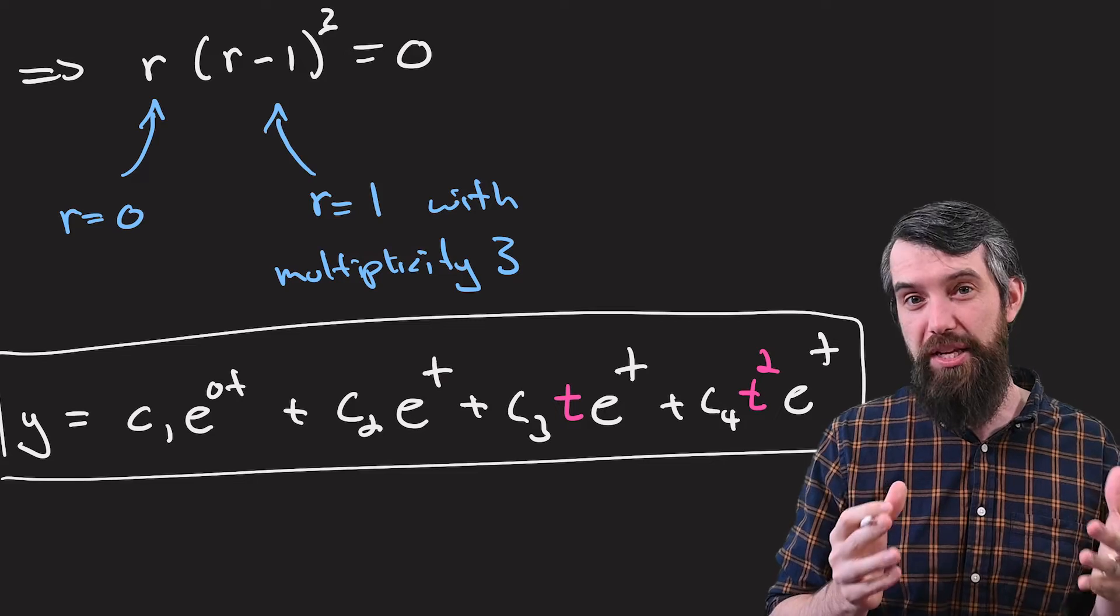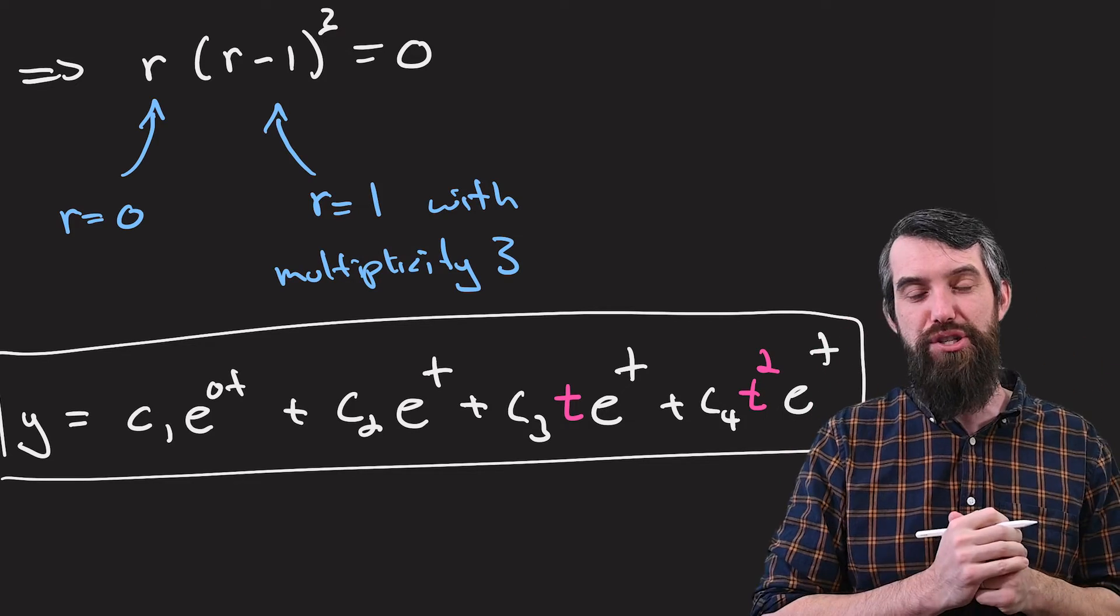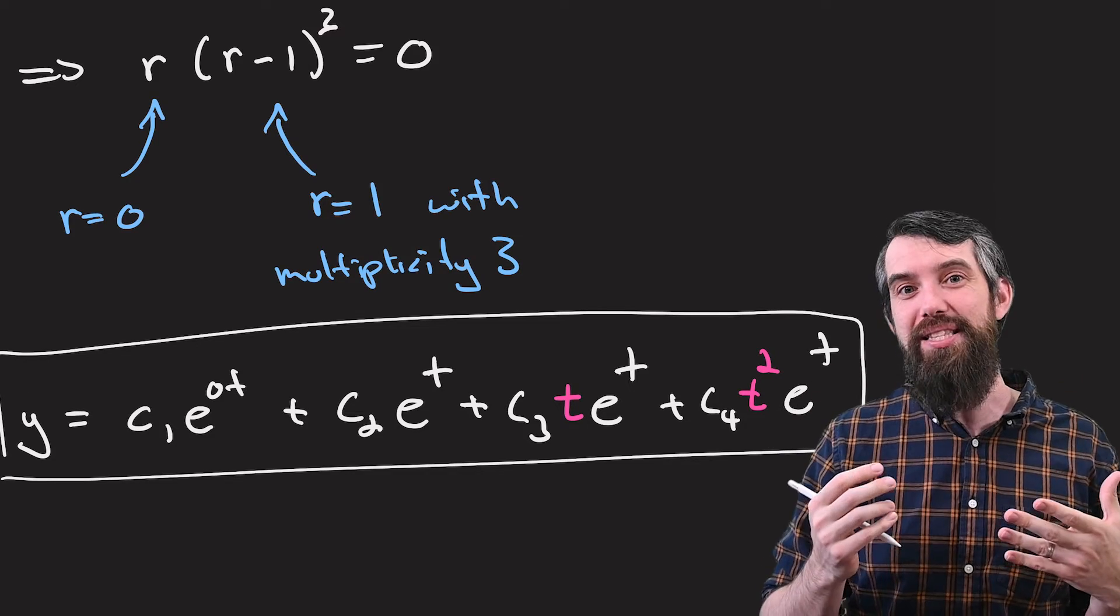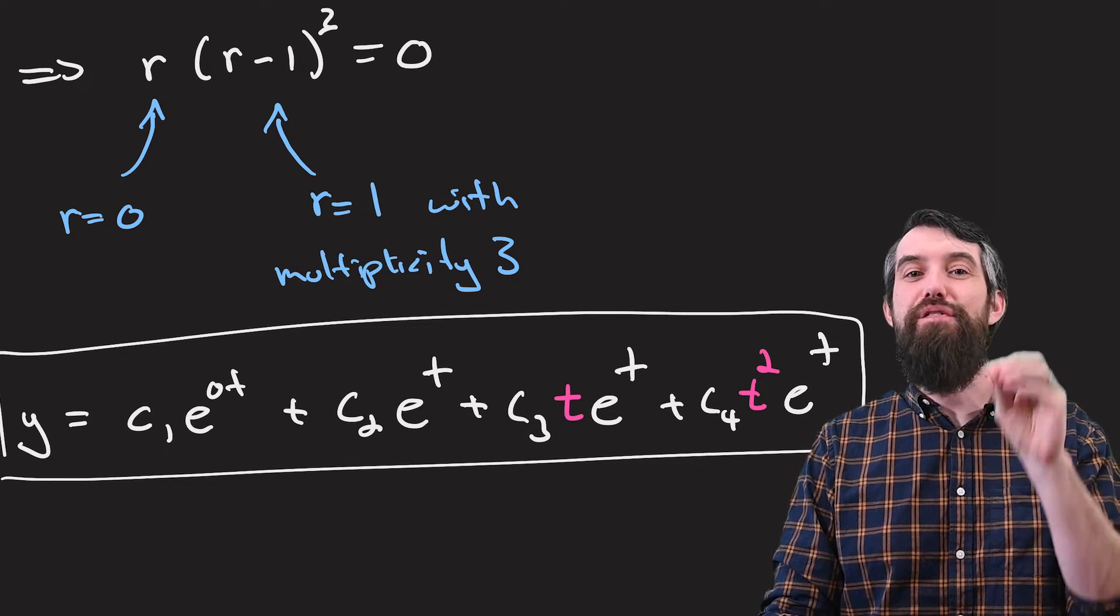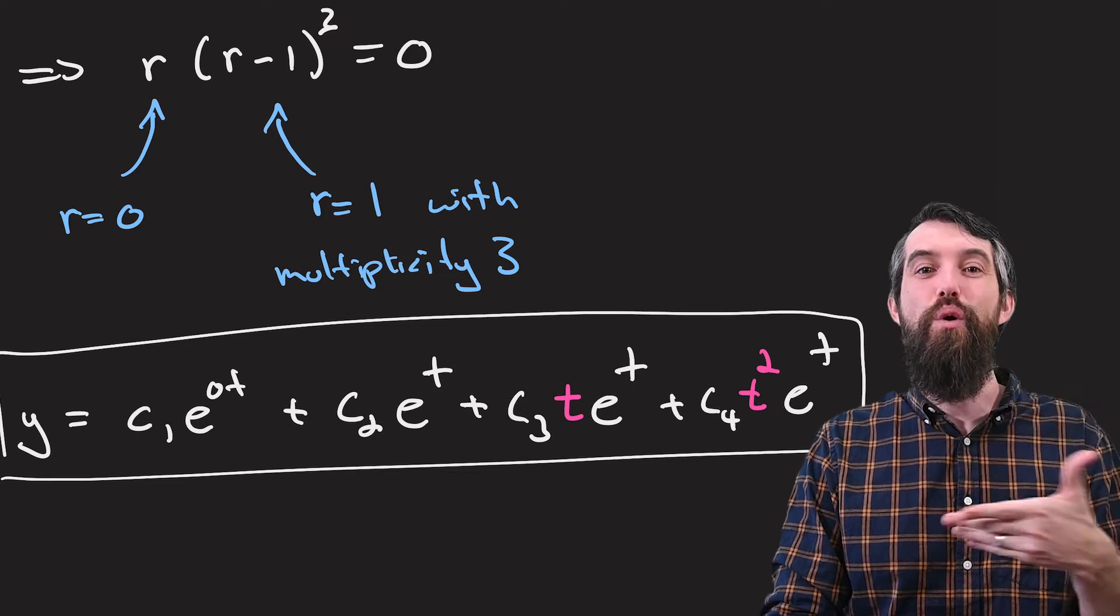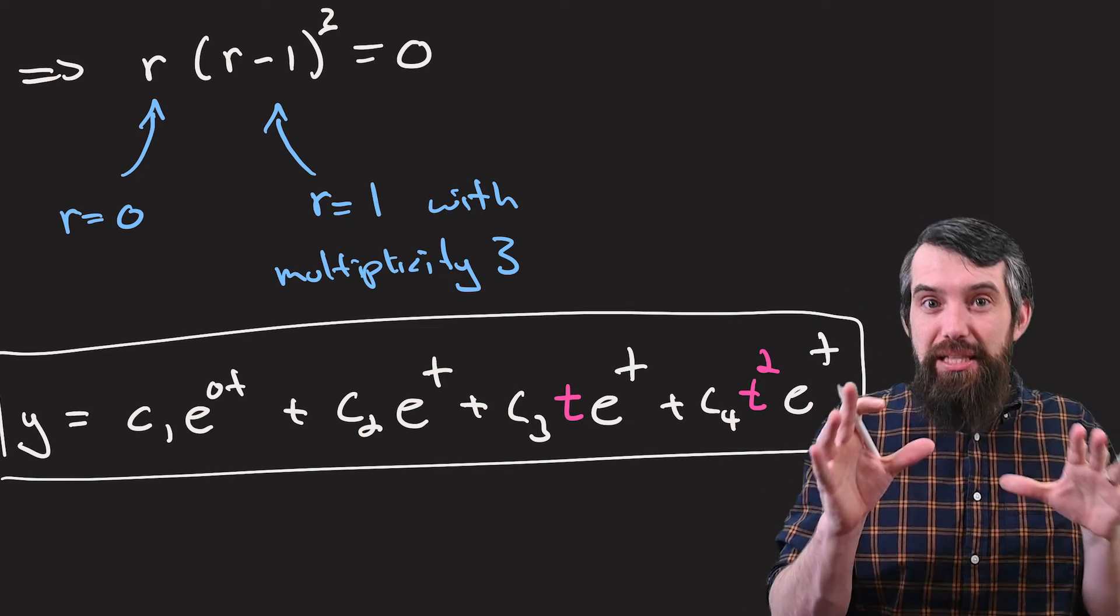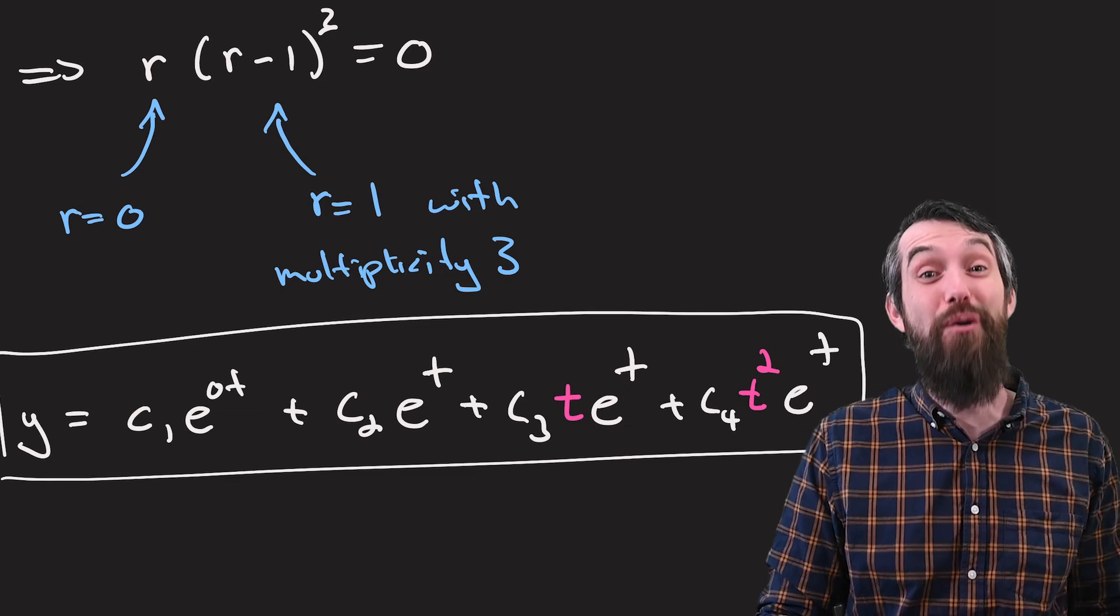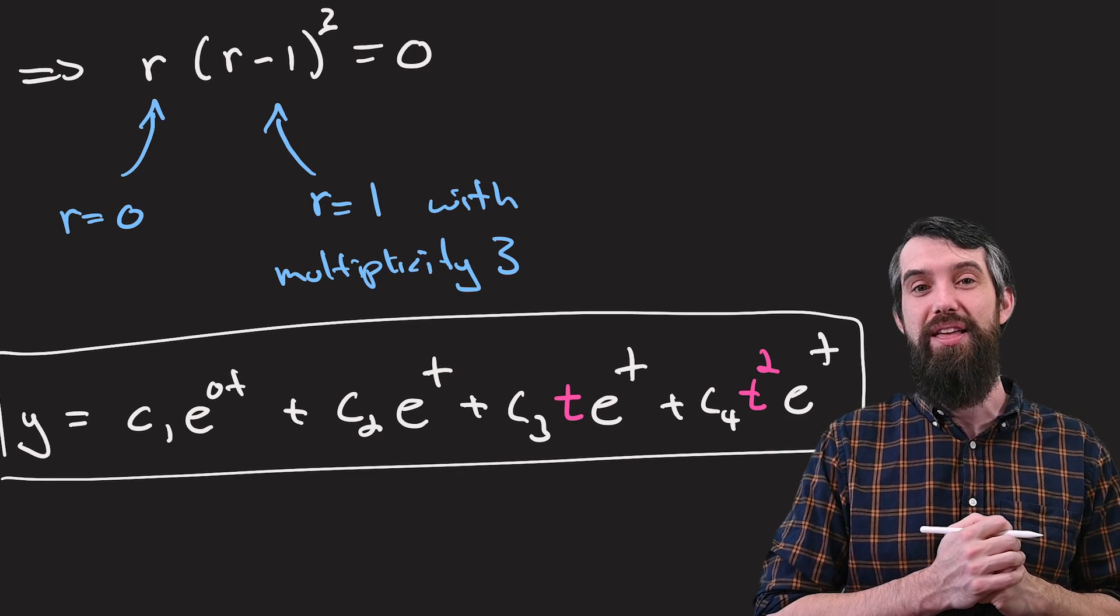The part I haven't really told you yet about is some of the more theory side for higher order differential equations. We're going to do that in the next video. We'll talk about existence and uniqueness. We'll talk about why it is that for an nth order differential equation we're looking for n linearly independent solutions to form my general solution. What do I mean by linearly independent? We'll more precisely talk about those concepts all in the next video. I hope you enjoyed this video. If you did, please give it a like for the YouTube algorithm. Leave a comment if you have any questions, and we'll do some more math in the next video.